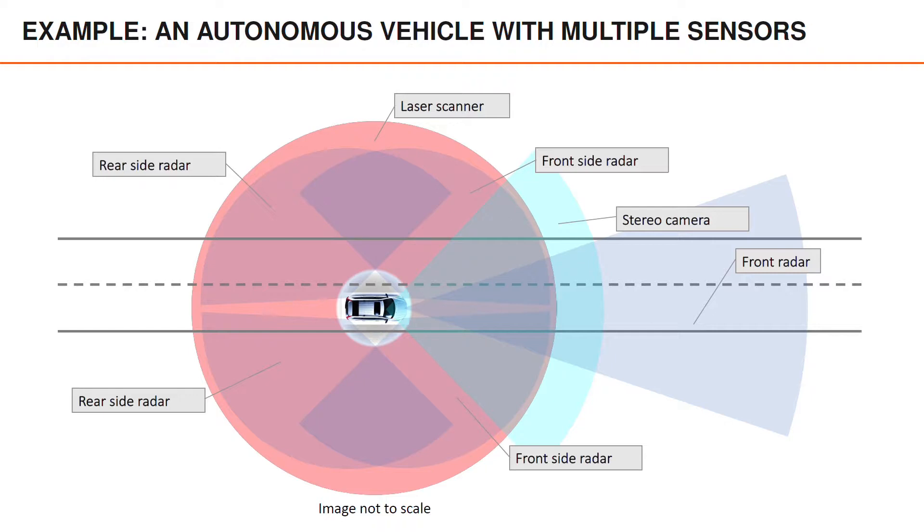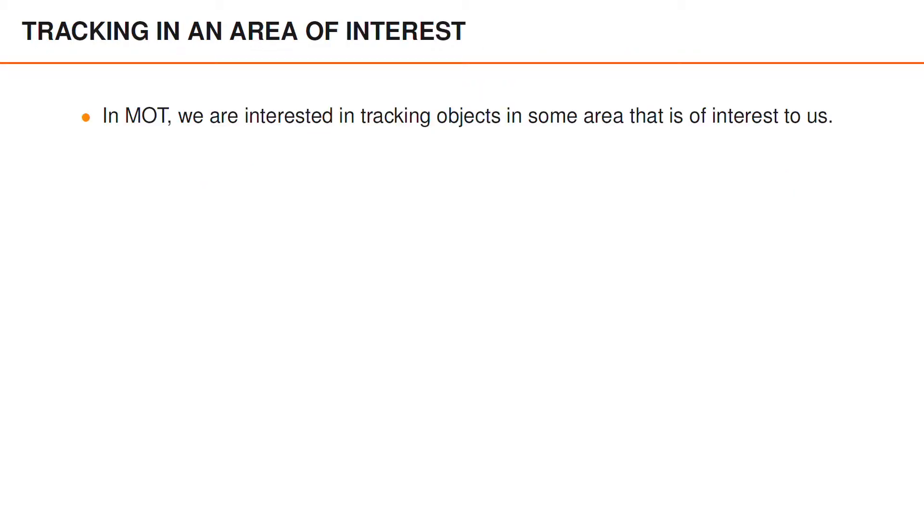We have a limited area that we are interested in when we do the tracking. Of course this area moves as the vehicle moves, it is fixed to the vehicle, but at any given time it is a limited area in which we do tracking. Actually this holds generally in most MOT. We are interested in tracking objects in some limited area that is of interest to us.